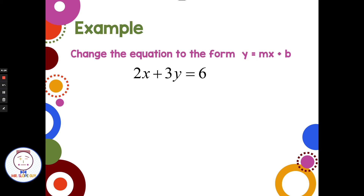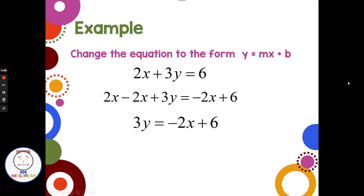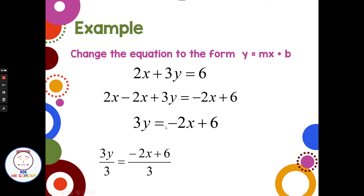Let's look at a new example: 2x plus 3y equals 6, and we want to write that in slope-intercept form. I want to get the x over to the other side, so since it's a positive 2x, I subtract 2x from each side. The 2x's cancel on the left, leaving 3y equals negative 2x plus 6. Now I just need to get rid of the 3 in front of the y by dividing both sides by 3. That gives me y equals negative two-thirds x plus 2, which is slope-intercept form.